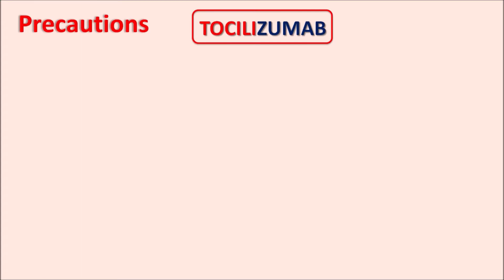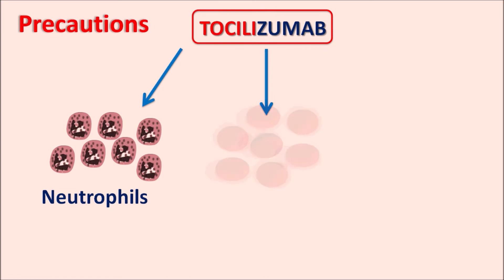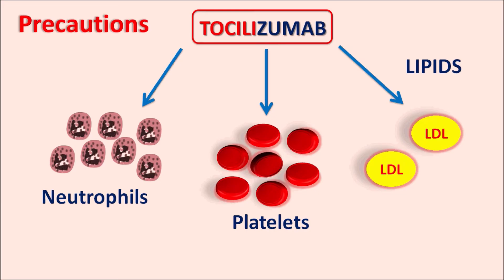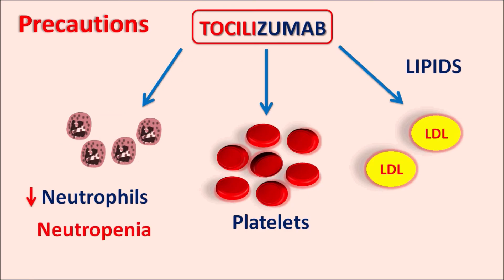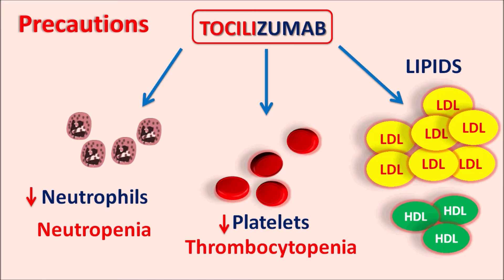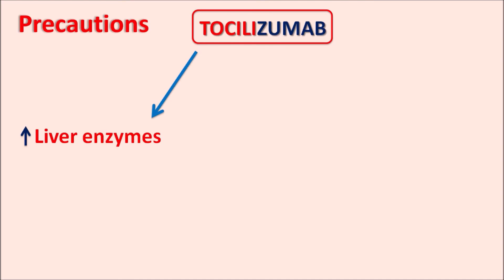Tocilizumab can affect the levels of blood components. Since this drug reduces the immune response, the neutrophil count is reduced, resulting in neutropenia, and it can also reduce the platelet count, resulting in thrombocytopenia. However, lipids are increased — particularly LDL cholesterol and HDL cholesterol are elevated, increasing total cholesterol levels. Care should be taken to monitor neutrophil count and thrombocytes, as excessive suppression can result in fatal effects. Similarly, tocilizumab can increase liver enzymes — alanine transaminase (ALT) and aspartate transaminase (AST) levels are increased. In patients with hepatic failure, this drug should be given carefully as it can produce further hepatic failure.